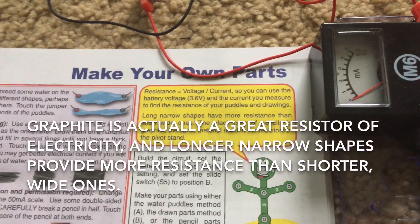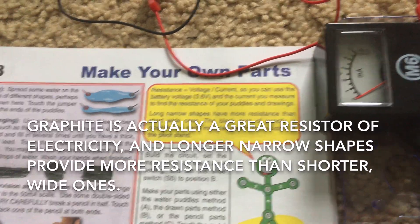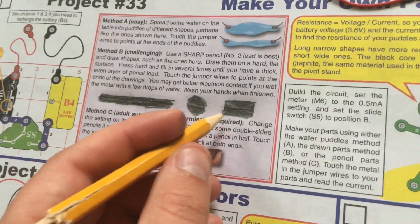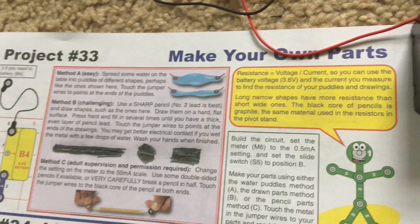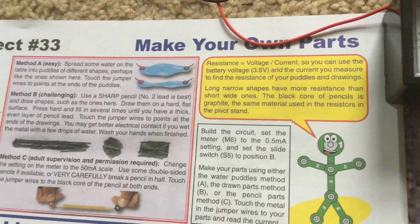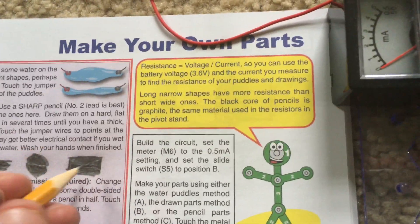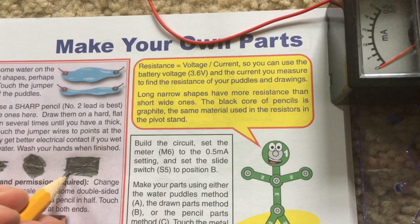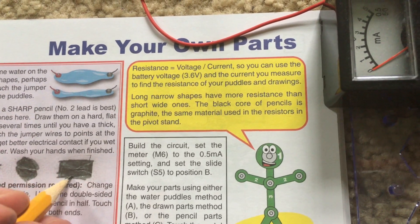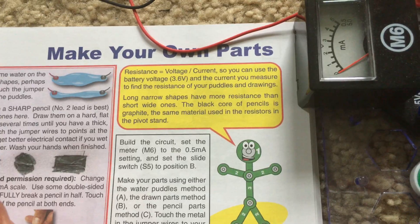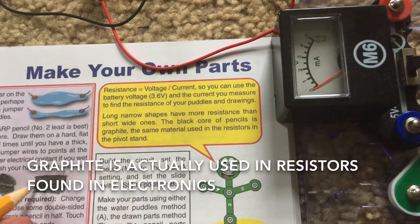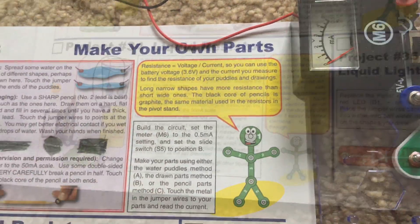Long, narrow shapes have more resistance than short, wide ones. Therefore, the circle and square for method B will be more conductive and carry more current. The material used in pencils is actually more of a resistor than a conductor and it's used in actual devices for limiting current.